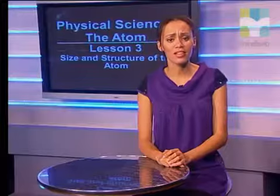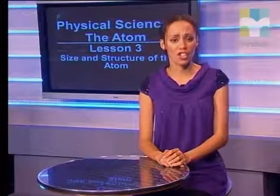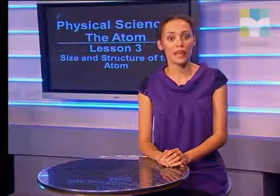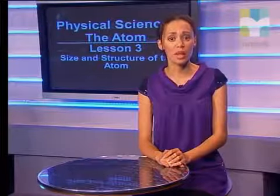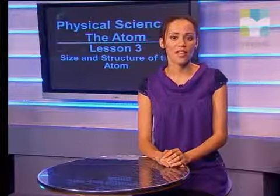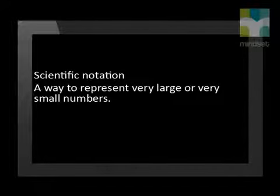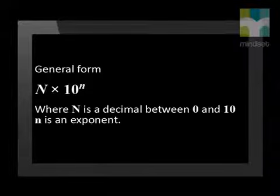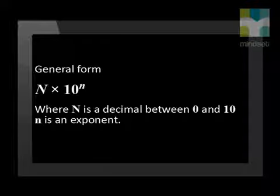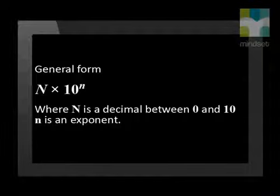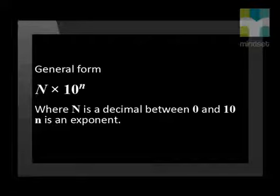In science, we often work with very large numbers, such as the distance of planets from the Sun, or very small numbers, such as the diameter of an atom. These numbers can often be written more easily in scientific notation. In scientific notation, the general form is written as n times 10 to the power n. So we have both a decimal number between 0 and 10 and an exponent.